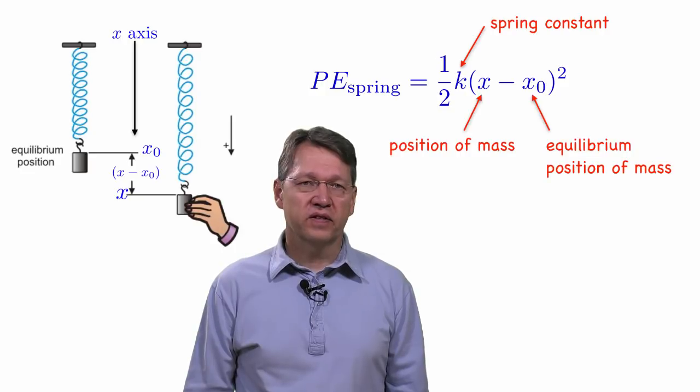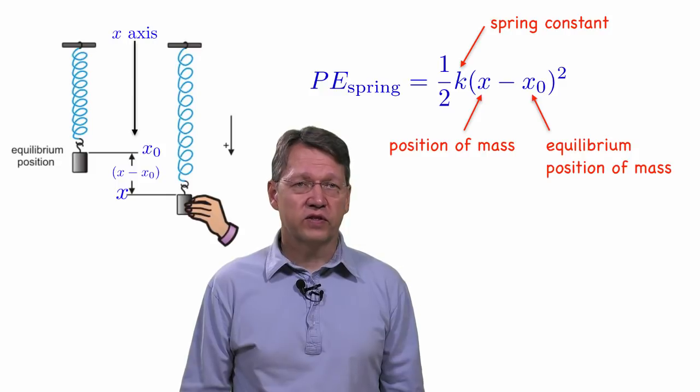k is the spring constant. It tells us the strength of the spring. If k is large, then it takes a lot of energy to stretch the spring.